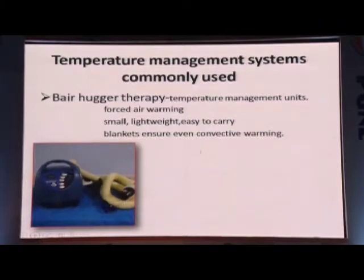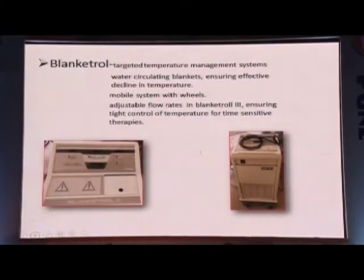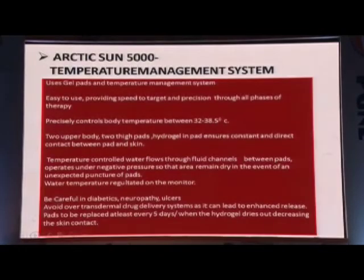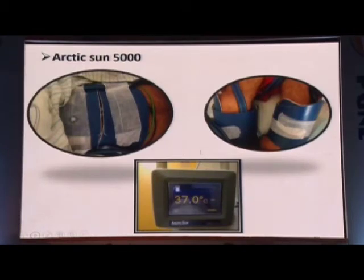Different methods for warming or cooling the patient: the bear hugger is a forced air warming device which most of us use — easy to carry, can even be used in an ambulance. A blanket roll is the traditional hypothermia blanket used under the patient during CPB surgery. Different types of blood warmers should also be used, particularly in off-pump CABG patients who tend to get hypothermic — if you want to extubate them earlier, it is important to maintain temperature. Arctic Sun is another temperature management system using gel pads on the patient, which cools much more effectively than other methods, typically for 24 to 48 hours.